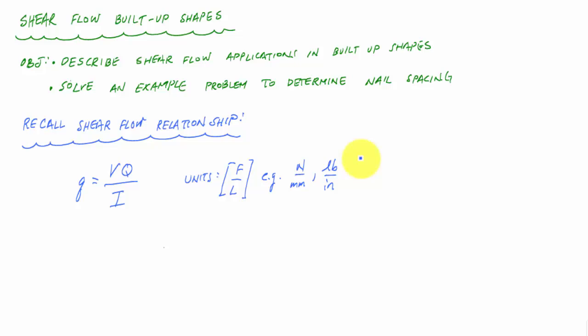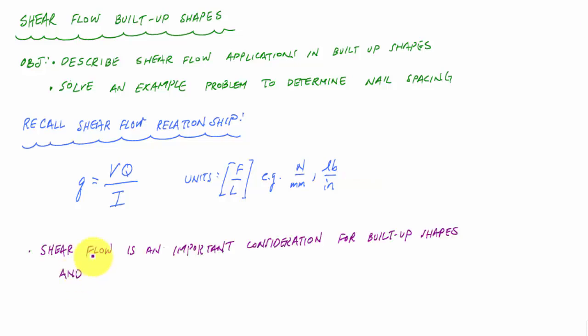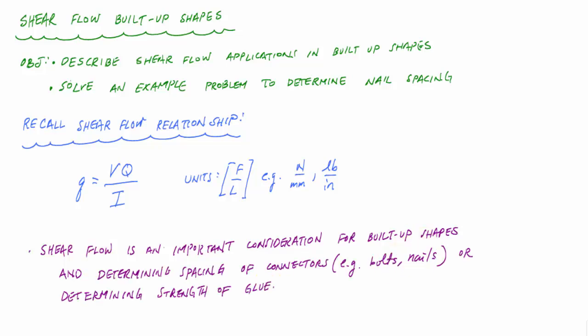Shear flow is really useful in built-up shapes, especially when you want to connect different cross-sectional elements together — to determine how many nails you need so the whole beam acts together, or to find the strength of glue needed to bond different layers so your cross section behaves like a single beam.